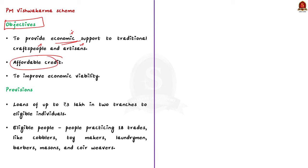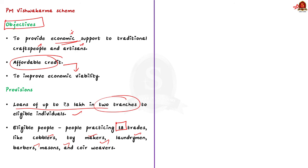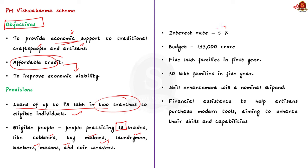Let us see the important provisions of the scheme. The scheme offers loans up to 3 lakh in two tranches to eligible individuals. These eligible individuals include people who are practicing 18 trades like cobblers, toy makers, laundry men, barbers, masons, and coin weavers. This loan comes with a concessional interest rate of 5%.